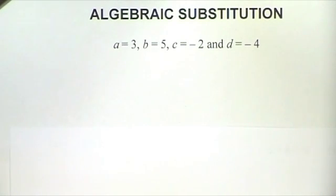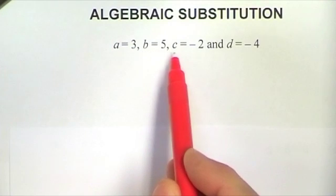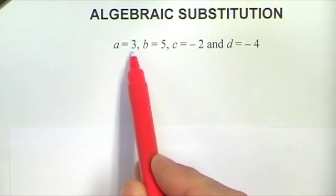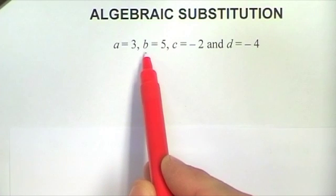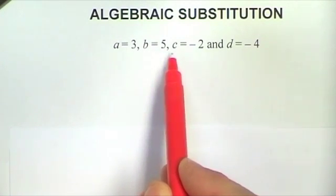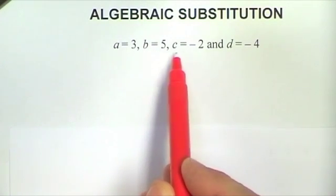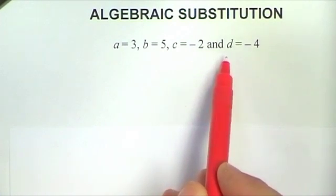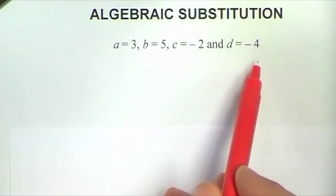In this video I'm going to be substituting into algebraic expressions. The expressions will contain the variables a, b, c and d. The value for a will always be 3, the value for b is going to be 5, the value for c is going to be minus 2, and for d the value is minus 4.